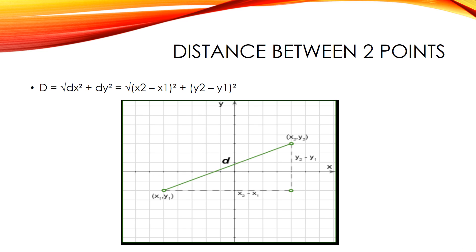Distance between two points: given coordinates of two points, the distance d between them is given by d = √(dx² + dy²), where dx is the difference between the X coordinates and dy is the difference between the Y coordinates of the points. As you can see, the distance formula on the plane is derived from the Pythagorean theorem.